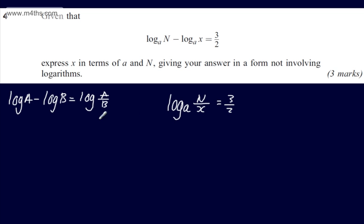We can go ahead and write the exponential equivalent. If we have log to the base a of b equal to c, the exponential equivalent is a to the power of c is equal to b. Therefore what I'm going to have is N over x will be equal to a to the power of 3 over 2.